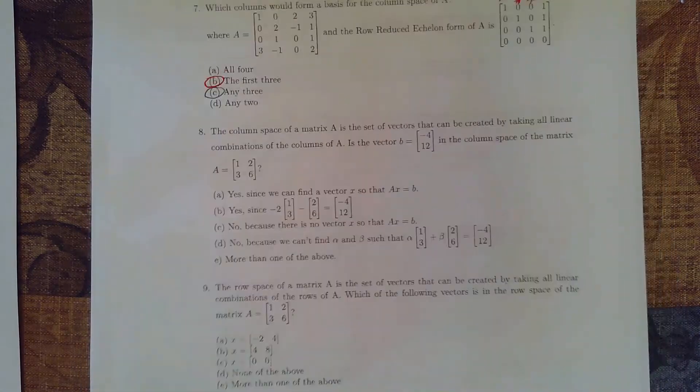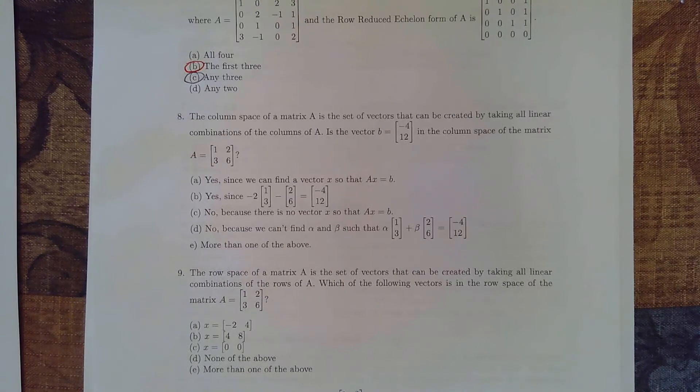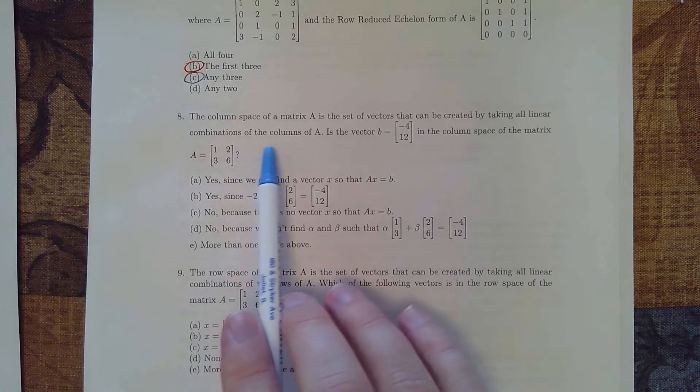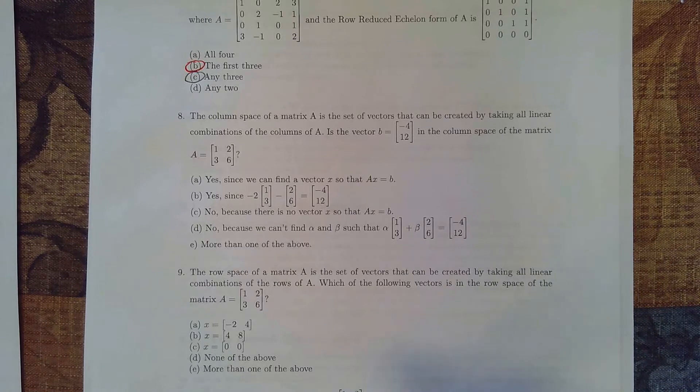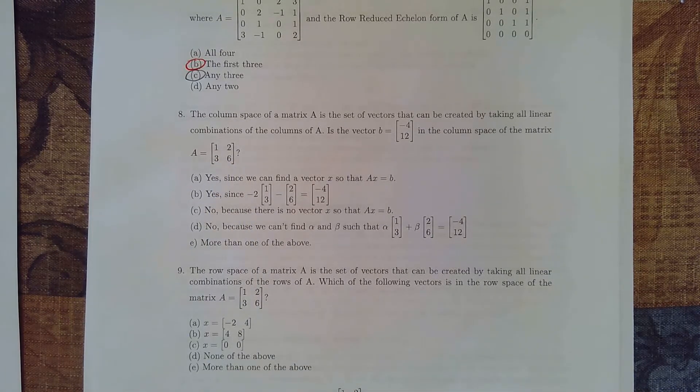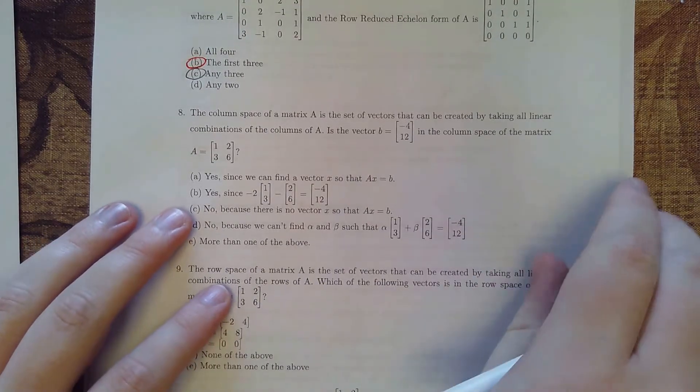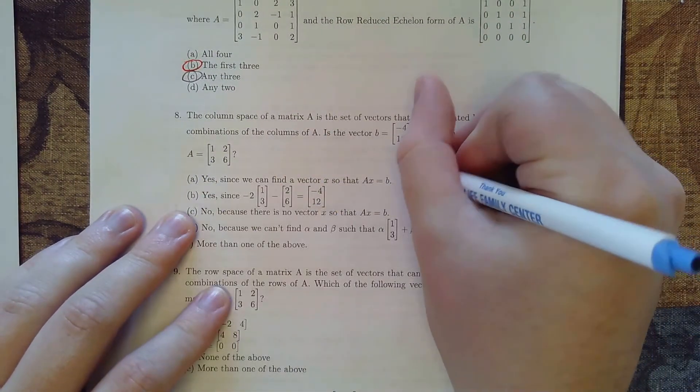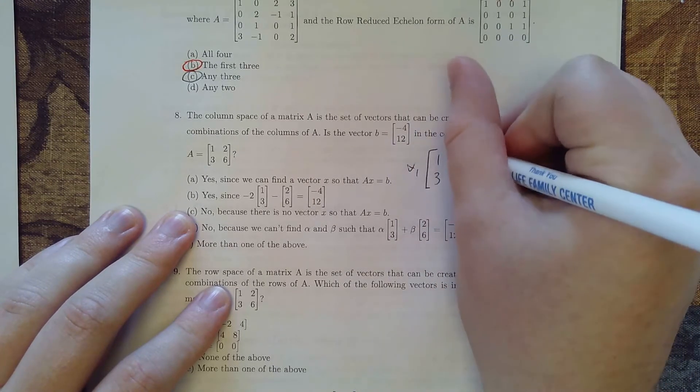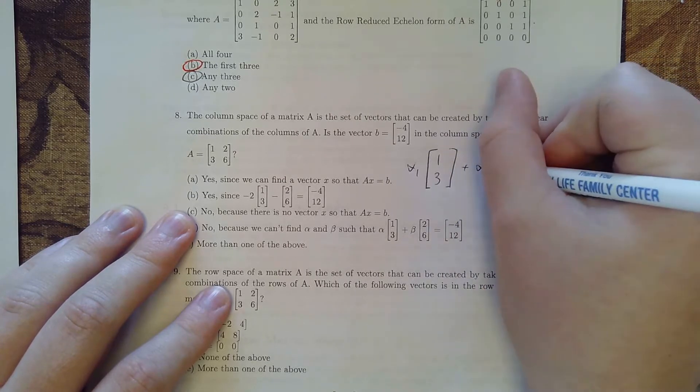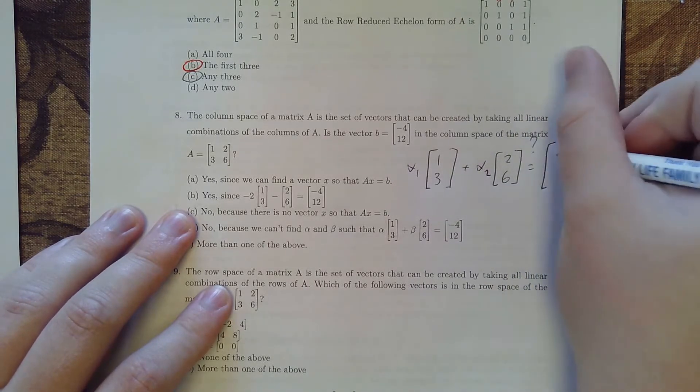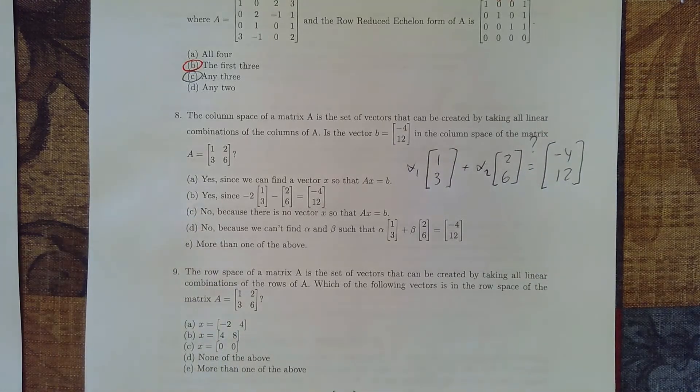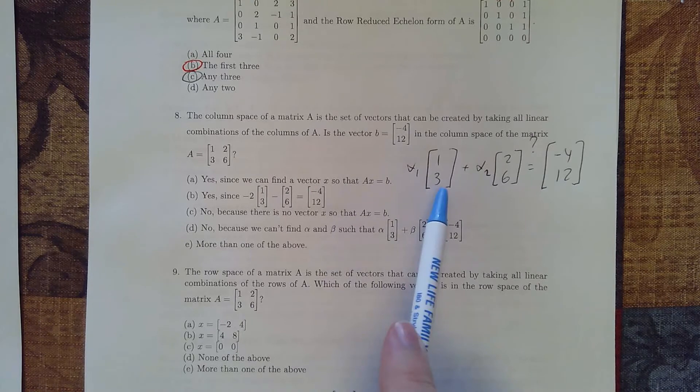All right, so a couple more questions. The column space of matrix A is the set of vectors that can be created by taking all linear combinations of the columns. So these three are a little bit trickier. So we want to answer is the vector negative 4, 12 in the column space of this matrix. So we want to know, we want to answer the question, if I took alpha 1 times 1, 3 plus alpha 2 times 2, 6, is that equal to negative 4, 12?